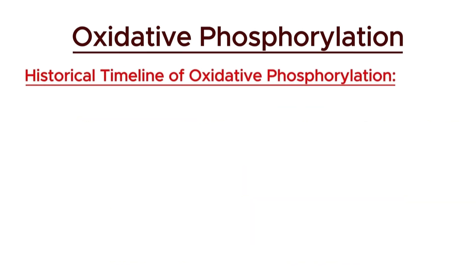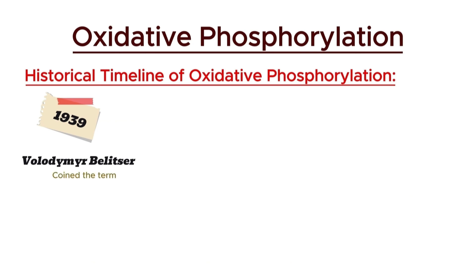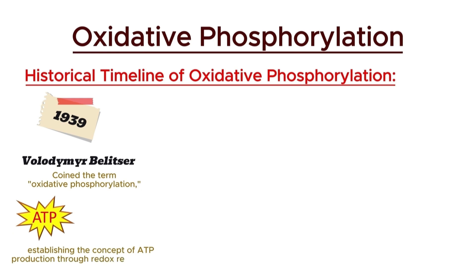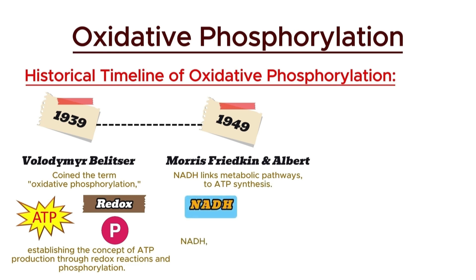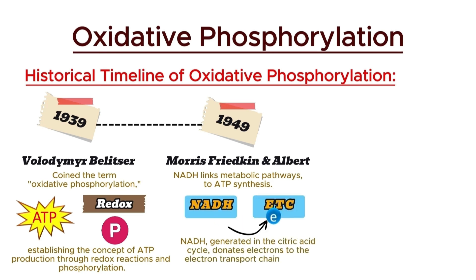In 1939, Volodymyr Belitzer coined the term oxidative phosphorylation, establishing the concept of ATP production through redox reactions and phosphorylation. Then in 1949, Morris Friedkin and Albert demonstrated that the coenzyme NADH links metabolic pathways, such as the citric acid cycle, to ATP synthesis. They showed that NADH generated in the citric acid cycle donates electrons to the electron transport chain, driving oxidative phosphorylation.